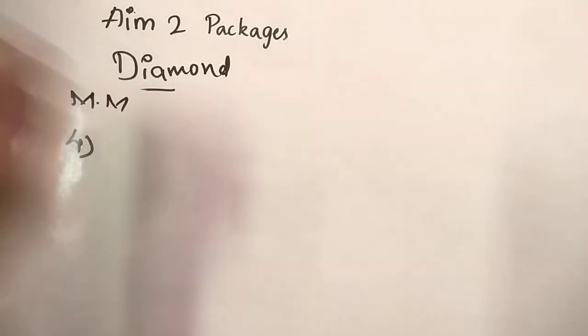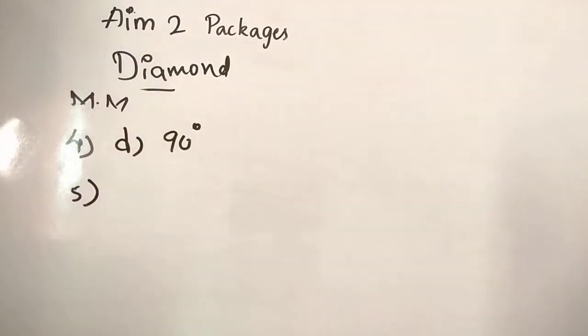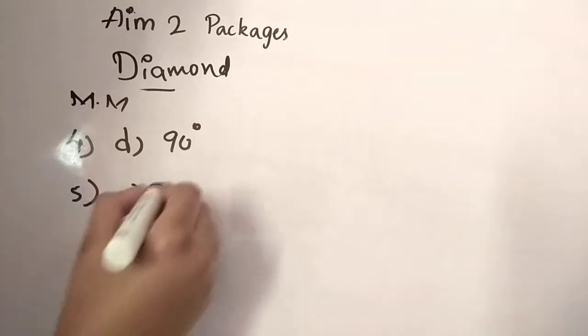Fifth one. Now, fifth question is tan theta is not defined at theta? Then, we have to see the answer for that. It is option A 15 degree.